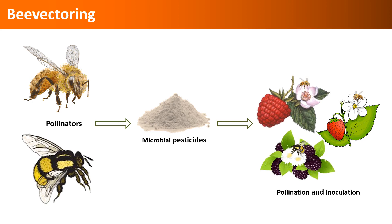Research shows that entomopathogenic fungi can also be delivered by pollinators for arthropod pest control. Pollinators get rid of most of the fungal inoculum during foraging, and high temperatures in the hives are usually unfavorable for fungal infections if a few spores are carried back into the hives. When biopesticides can be delivered through pollinators, it will reduce the need for chemical pesticide applications and the associated costs, and a strategy like this will also contribute to resistance management.